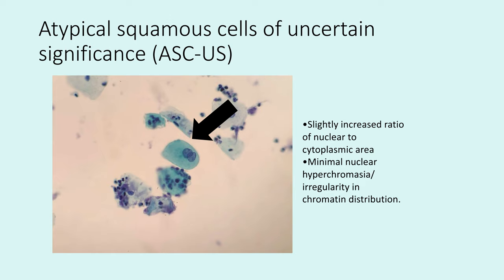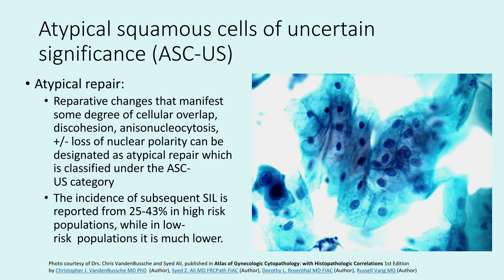Another example is a binucleate cell that looks a little bit metaplastic but is somewhat degenerated. The nuclear outlines are not very irregular, and the chromatin appears more vesicular than clumped. Specific subcategories within ASCUS include atypical repair, which shows reparative changes with nuclear overlap and discohesion, anisonucleosis, and sometimes loss of nuclear polarity. This fits within the ASCUS diagnosis when seen in sheets where individual cells have qualifying changes. In this group, squamous intraepithelial lesion risk can be high in high-risk populations but much lower in low-risk populations.